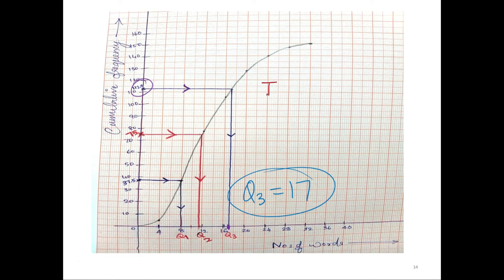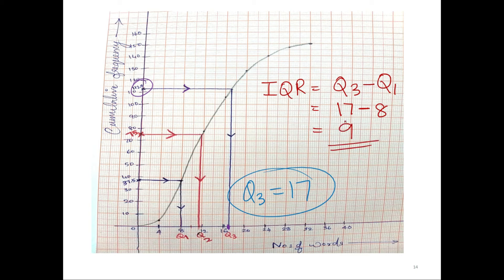The interquartile range IQR equals Q3 minus Q1. My Q3 is 17 and my Q1 is 8, which gives me a value of 9 as my IQR. There is a limit within which accuracy is discussed, as values can differ based on your drawing, and your answer can vary from 9 to 11.